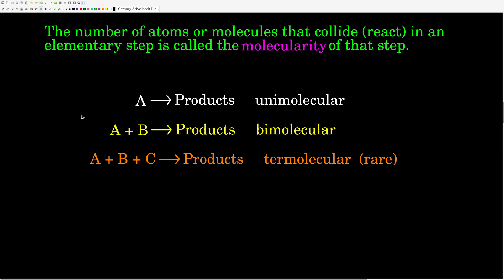Now, molecularity. In an elementary step, the number of atoms or molecules of reactants that must collide in order for the reaction to occur determines what we call the molecularity of that elementary step. The reactants must come together, they have to hit, they have to have enough energy to overcome the activation barrier, plus they have to hit with the right orientation. If that happens, they form the products. If there's just one reactant, it doesn't have to hit anything else — that is what we call a unimolecular step.